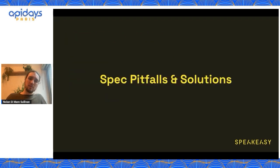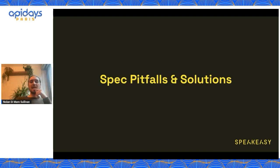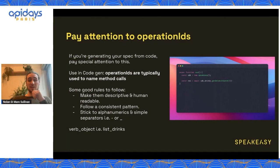Okay, so this is going to be the bulk of the session — I wanted this to just be really tactical. This is going to be about common pitfalls that people run into when they're actually writing their spec and how you can avoid them. One thing when you're writing your spec that you're going to want to pay attention to if you plan on using it for CodeGen is operation IDs.